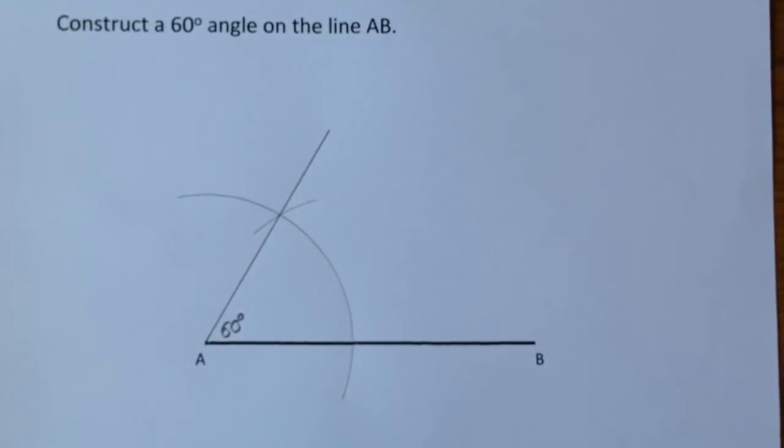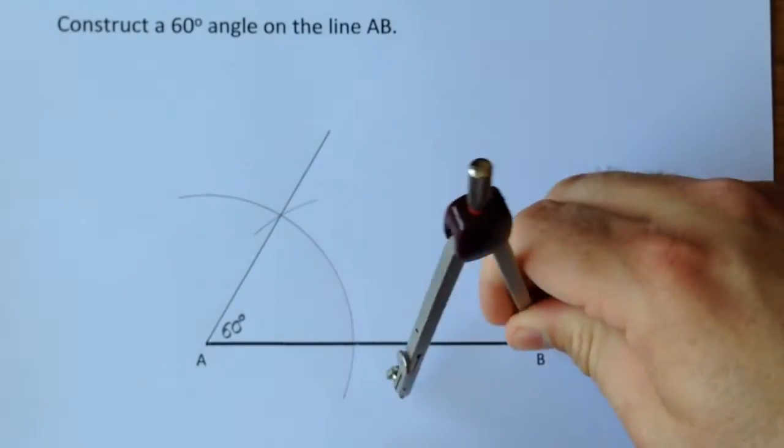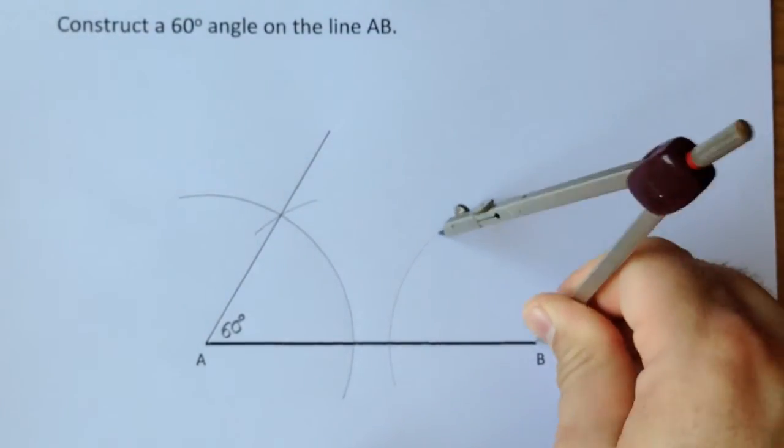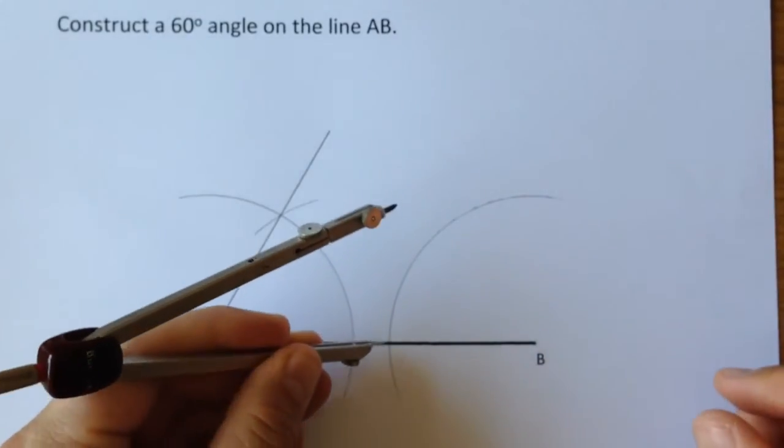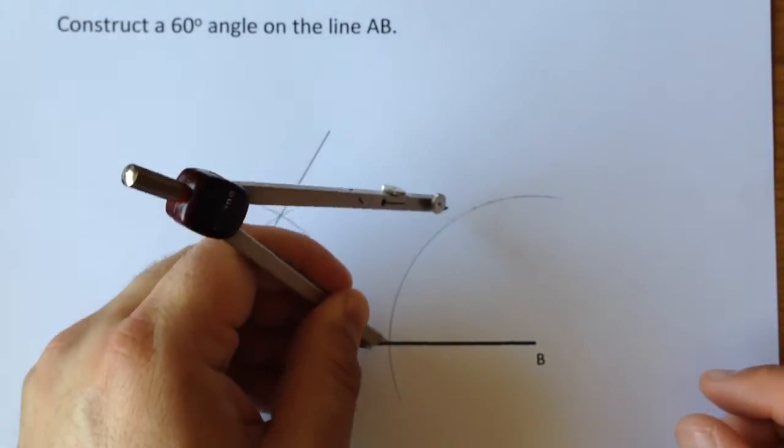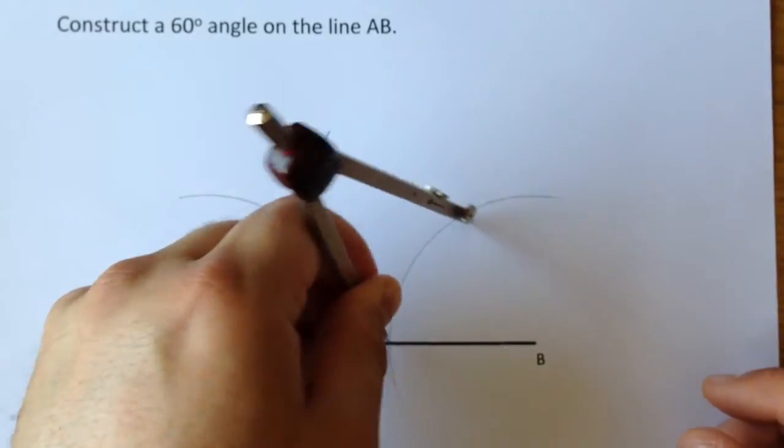If you wanted to do it from the other end, again put the sharp point on B and draw a big arc. Without altering the compass, move it to where the arc crossed the line AB and draw a small arc.